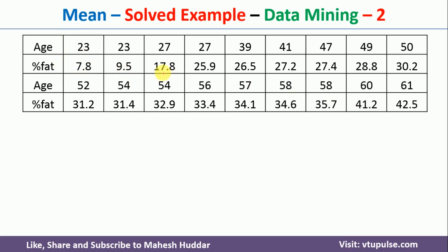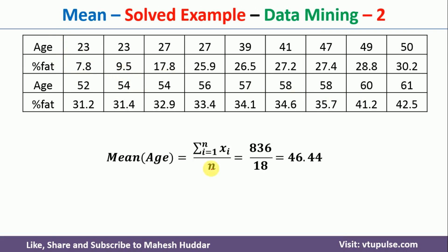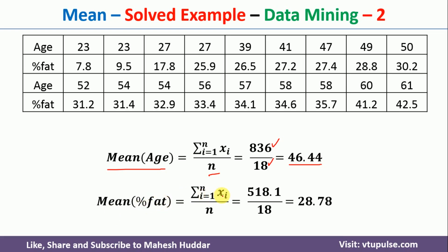The first metric is mean. The mean of age is equal to the summation of xi divided by n, where xi is the sum of all the ages divided by the total number of values. If you add all the given ages, it will become 836, and the total number is 18, so the average age is 46.44. Similarly, the mean of percentage fat is summation of xi divided by n. Adding all the fat values gives 518.1 divided by 18, which equals 28.78.